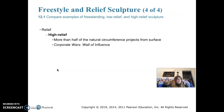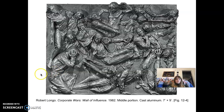High relief is characterized when more than half of the natural circumference of the modeled form projects from the surface — figures are often substantially undercut, meaning they pop out much more. An example is Robert Longo's Corporate Wars: Wall of Influence from 1982, cast in aluminum.